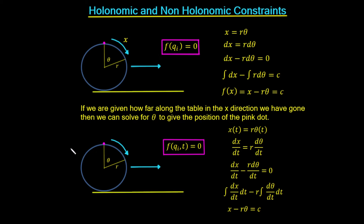In the last video we looked at degrees of freedom and constraints. In this video we're going to take a more detailed look at constraints and split them into two types: holonomic and non-holonomic. To understand these two types of constraints it's best seen by example, so on the first page we're going to look at holonomic constraints.